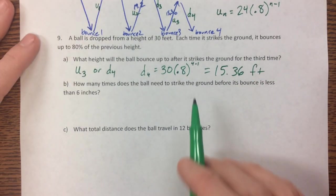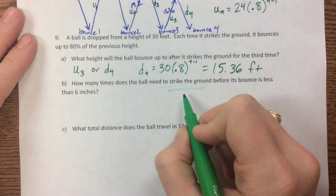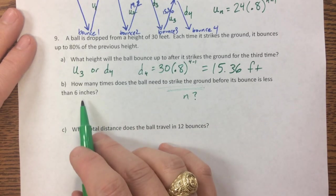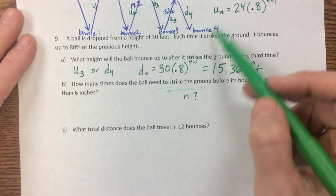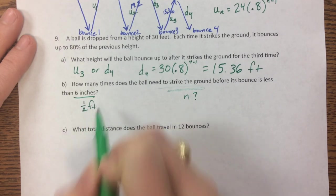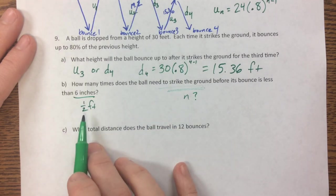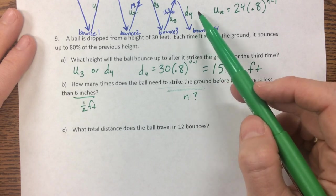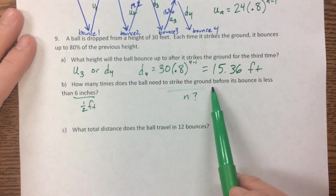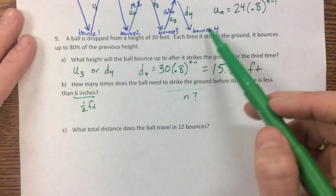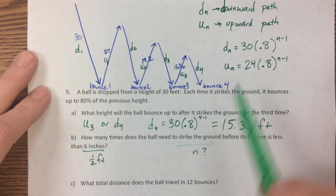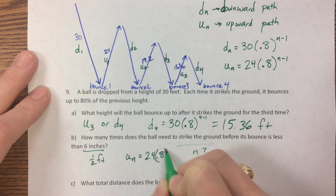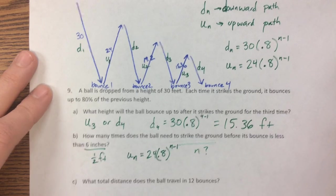It says how many times does the ball need to strike the ground, so now we're looking for n. Before it bounces less than six inches? Before it bounces means once we want to see when does u_n, six inches would be half a foot, so let's keep our units the same. We want to know when does u_n, when is it first less than half a foot? So u_n was equal to 24 times 0.8 to the n minus 1.